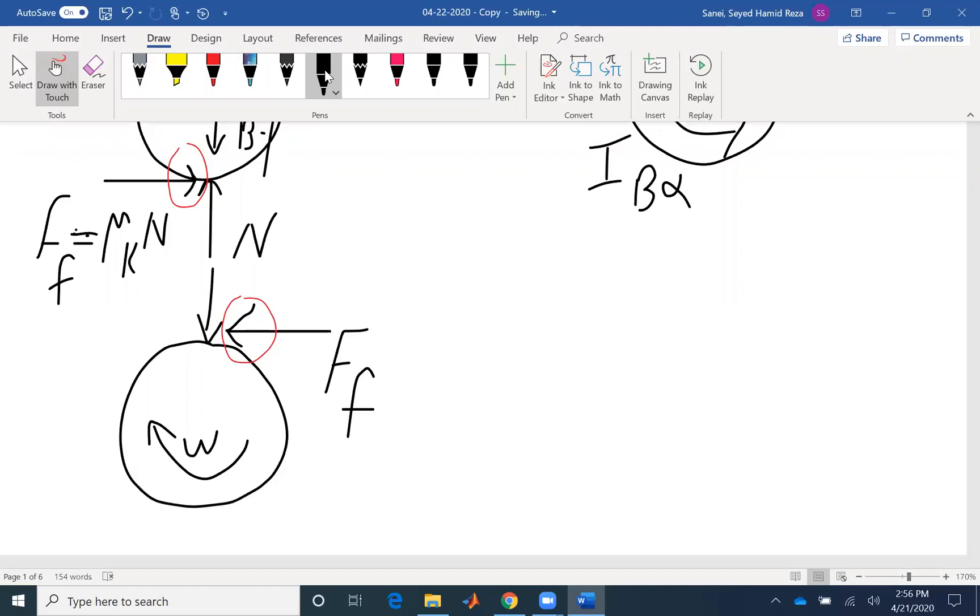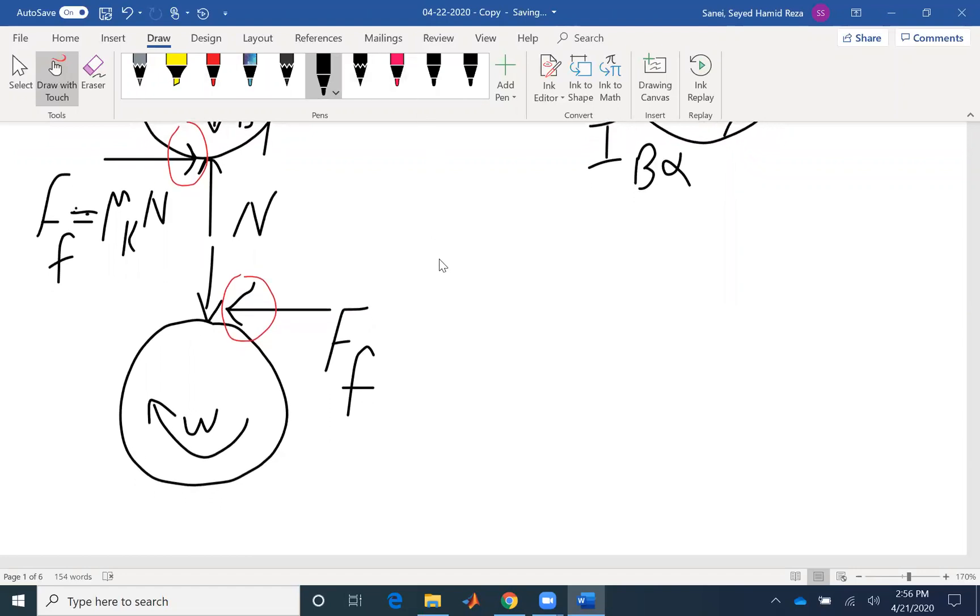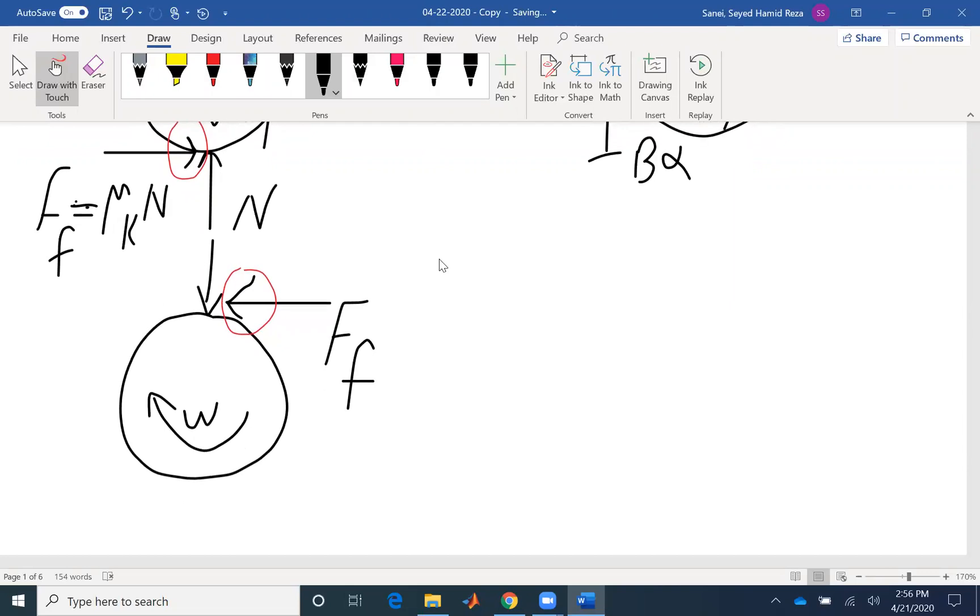Now we can write our equations. For 2D, we have three equations. Summation of forces in X equals MA, but because in rigid body, different points have different acceleration, we just write this equation for center of gravity. Summation of forces in Y, MA at the center of gravity.